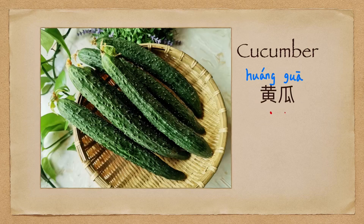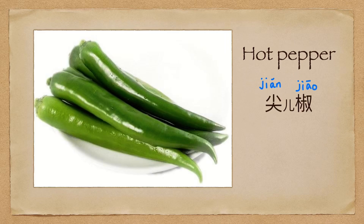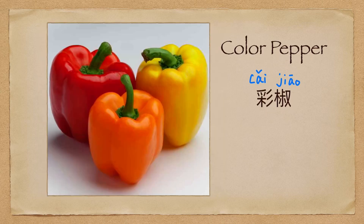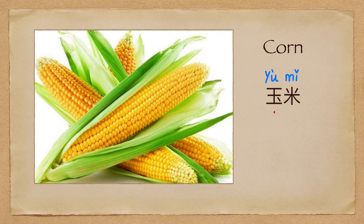黄瓜 (cucumber). 姜蕉 (plantain). 青蕉 (green banana). 彩蕉 (colored banana). 玉米 (corn).